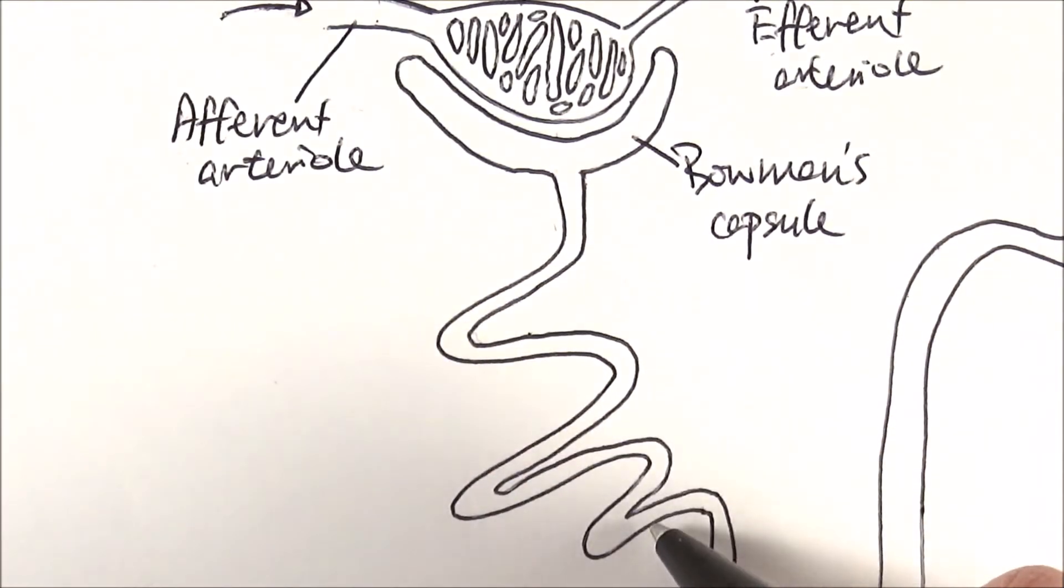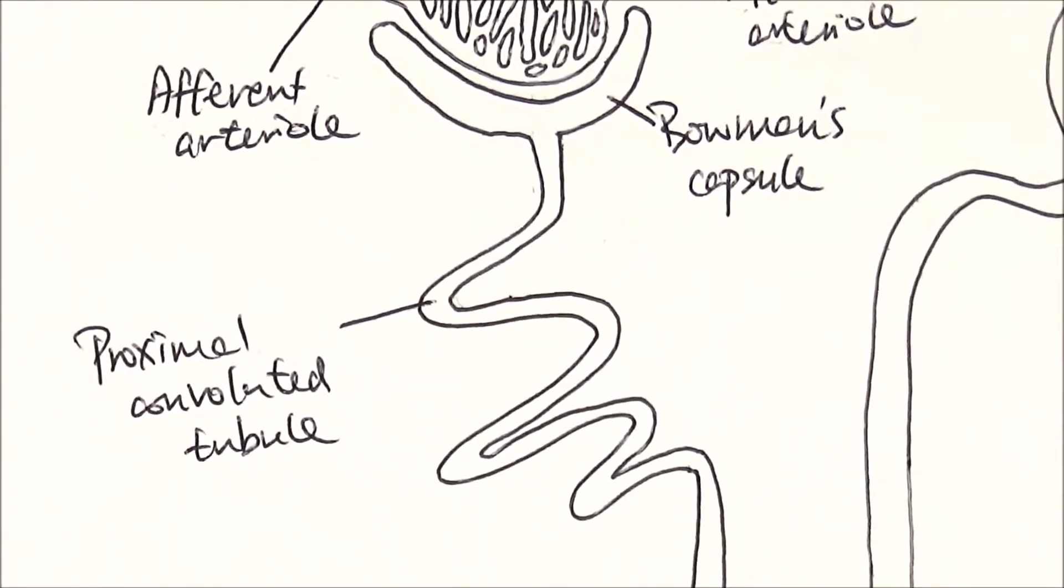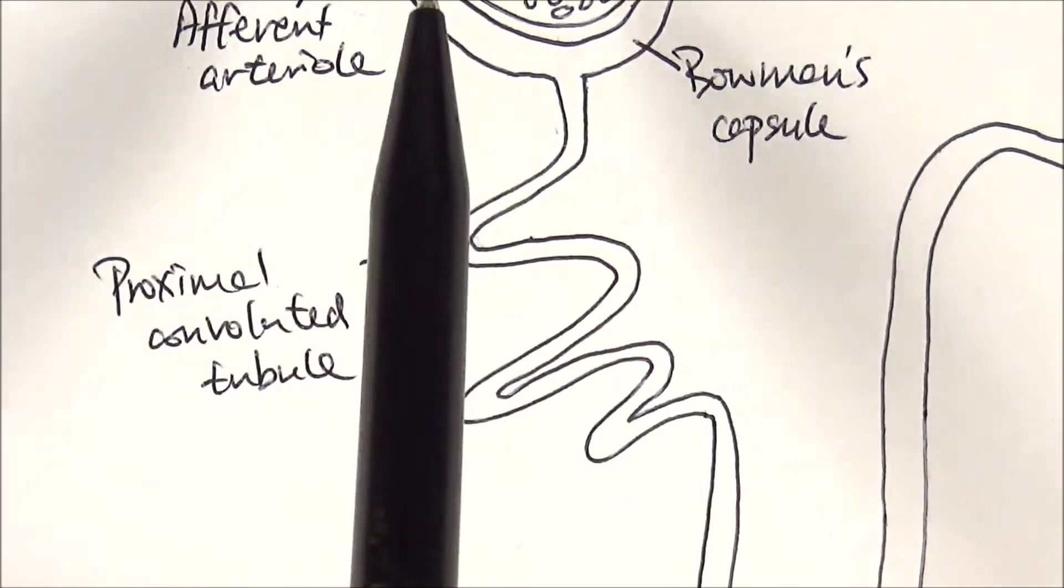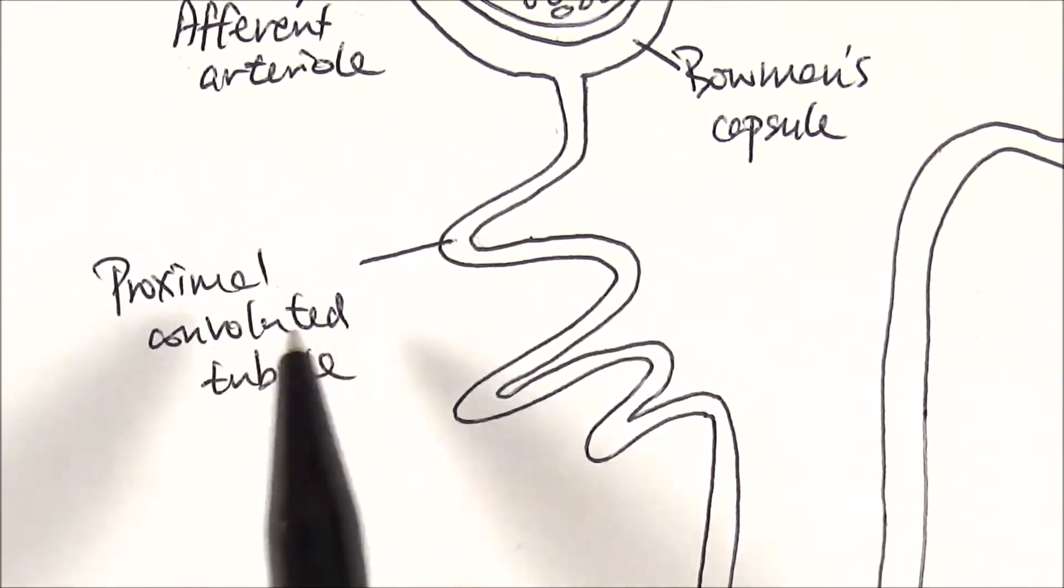Then it goes into this proximal convoluted tubule, which is also called the first convoluted tubule. It's the one that is closest to the Bowman's capsule, the beginning of this whole journey. So proximal meaning close to something, so close to the start.